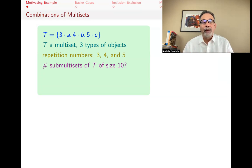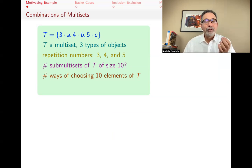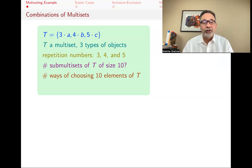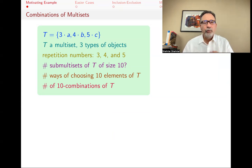So I want to pick 10 elements, and I want to know how many different ways I can do that. Another way to say the same thing is that I want to choose 10 elements of T. However, elements of T are not all different from each other — some of them are the same. Another vocabulary used for these is the number of 10-combinations of T. Sub-multisets makes that a little bit more clear, but all of these would be the same thing.